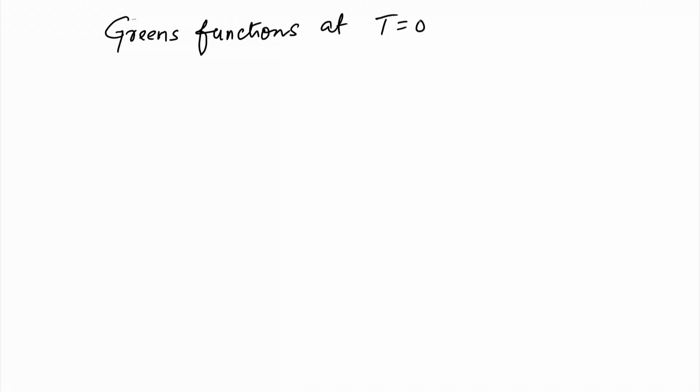We shall talk about Green's functions. In particular, we will start with Green's functions at zero temperature, T equal to 0, and then we will learn how to extend it to finite temperature. But before we discuss Green's functions at T equal to 0, we need a basic definition of Green's function. We have introduced Green's functions in the context of propagators — the retarded propagator and advanced propagator were identified as Green's functions. I will give a brief introduction to what Green's functions are and how they are relevant to condensed matter physics or many-body phenomena.